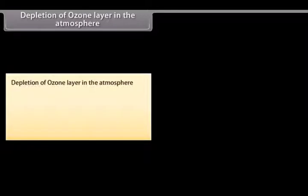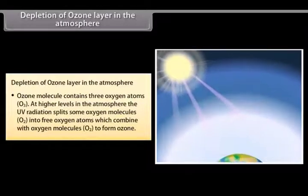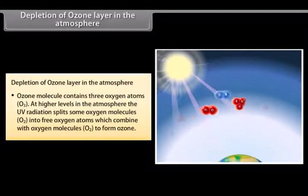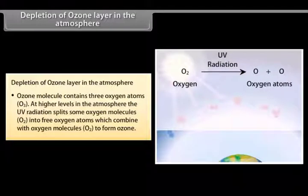Depletion of ozone layer in the atmosphere. Ozone molecule contains three oxygen atoms, O3. At higher levels in the atmosphere, the UV radiation splits some oxygen molecules, O2, into free oxygen atoms, which combine with oxygen molecules, O2,